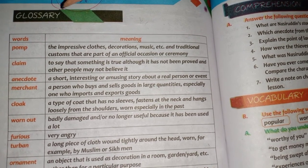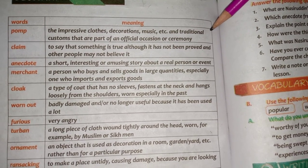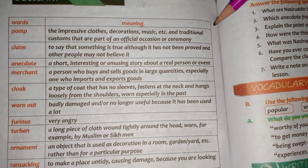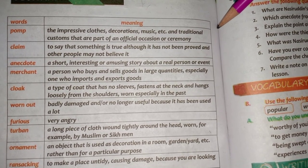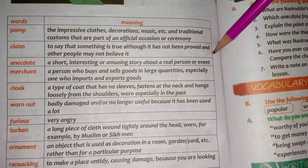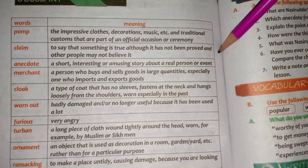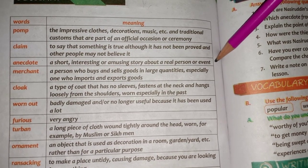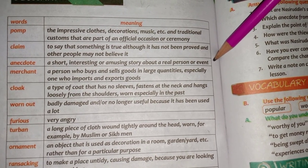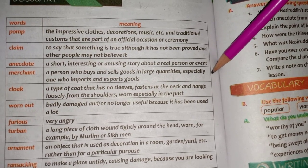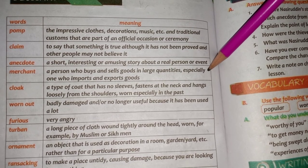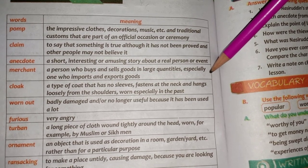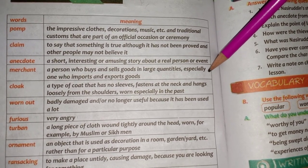Let us discuss the words. The first word is Pomp (Dhoom Dham) — the impressive clothes, decorations, music, etc. and traditional customs that are part of an official occasion or ceremony. Claim (Dawa) — to say that something is true although it has not been proved and other people may not believe it. Anecdote (Hikayat) — a short, interesting or amusing story about a real person or event. Merchant (Sodagar) — a person who buys and sells goods in large quantities, especially one who imports and exports goods.